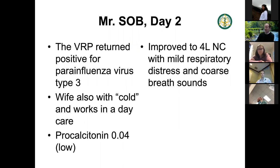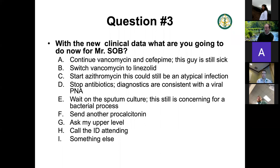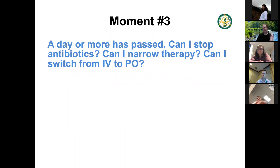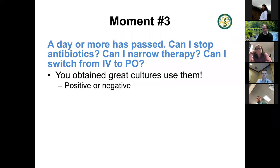Mr. SOB update: the VRP returned positive for parainfluenza. His wife had a cold three days ago. He had a low procalcitonin. He improved to four liters nasal cannula with mild respiratory distress and coarse breath sounds. With this new clinical data, what do you do? I now have a diagnosis. He's not 100% better but looking okay. This brings us to moment three: a day or more has passed — can I stop antibiotics, narrow therapy, or switch from IV to PO? Positive and negative cultures are both valuable.